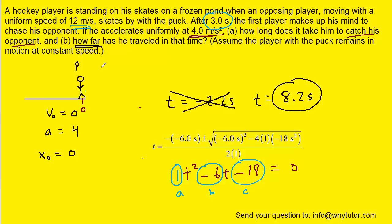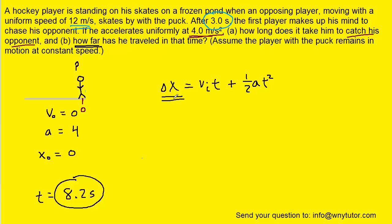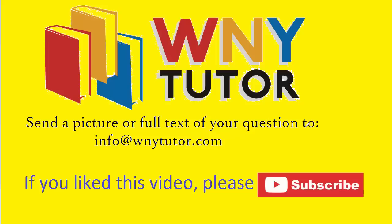To solve part b — how far has the player traveled in 8.2 seconds — we go back to the kinematics formula. Delta x represents the displacement, which is how far something has traveled. Plugging in all the known values for the player, we get approximately 1.3 times 10 to the power of 2 meters. That is how far the player travels.